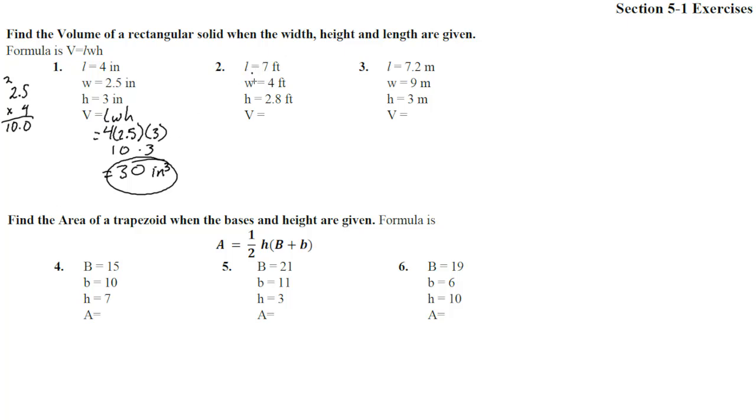Number two. LWH is 7 times 4 times 2.8. 7 times 4 is 28. 28 times 2.8: 8 times 8 is 64, carry the 6. 8 times 2 is 16, plus 6 is 22. Put a 0 there for the second row. 2 times 8 is 16, carry a 1. 2 times 2 is 4, plus 1 is 5. That gives us 78.4. In this case, we have feet times feet times feet, which is feet to the third power, or cubic feet.